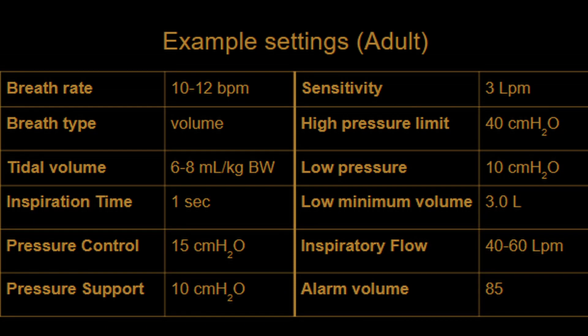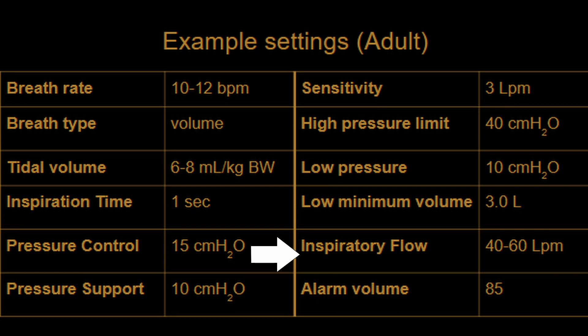Ventilators have many settings that control the breathing cycle of the patient. Here we show some of the suggested settings for adult patients. The respiration rate should be around 10 to 12 breaths per minute or BPM. The tidal volume should be 6 to 8 milliliters per kilogram of body weight. Inspiratory flow should be about 40 to 60 liters per minute, maintaining an inspiratory to expiratory ratio of about 1 to 2 or 1 to 3 to prevent auto-positive end expiratory pressure.